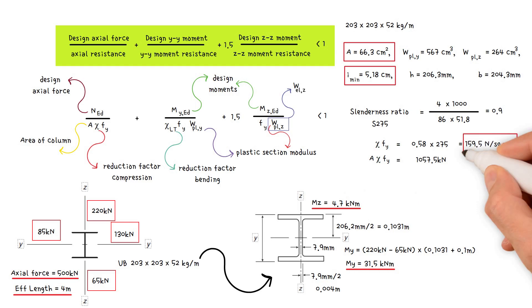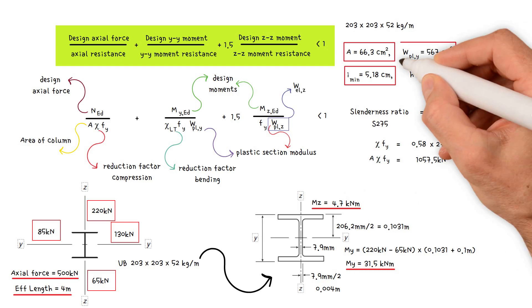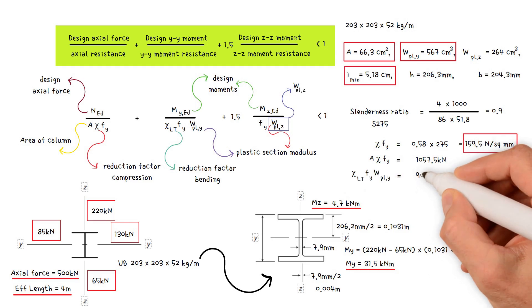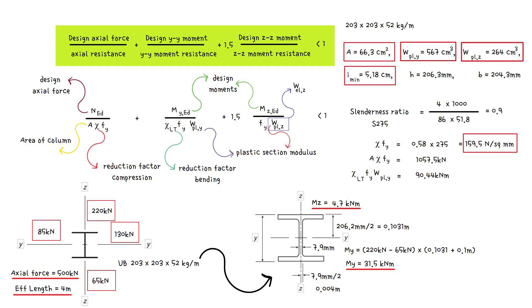Bending stress times plastic section modulus y-axis equals 90.44 kilonewton meter. Yield stress times plastic section modulus z-axis equals 72.6 kilonewton meter.